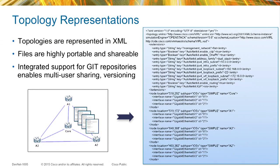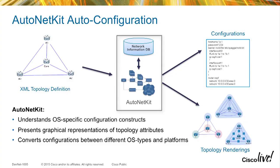VIRLmaestro creates an XML-based topology representation file containing descriptions of all nodes, links, node properties, and configurations — including the actual IOS configuration for the topology. This makes topologies repeatable: providing the same configuration and starting it in VIRL gives the same running routers with the same configuration every time.